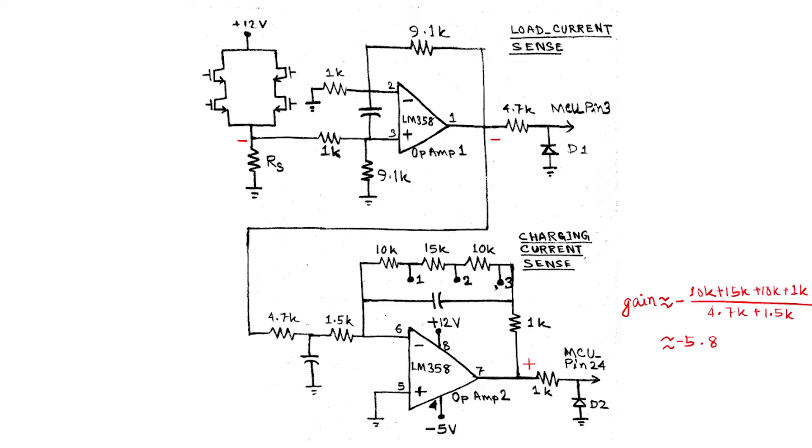During inverter mode, the output of op-amp 1 will be positive, and output of op-amp 2 will be negative, and that will be opposite during charging. The diodes D1 and D2 clamp the load current sense or charging current sense signal to the ground. This prevents any large negative voltage from going to the microcontroller.